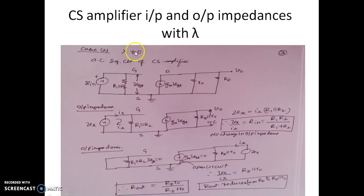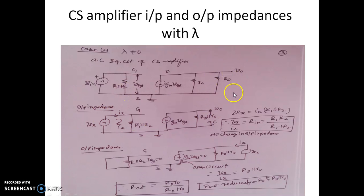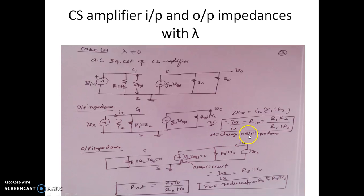Now we continue with the CS amplifier input and output impedances considering lambda non-zero. When lambda is non-zero, R0 is connected within the device — this is the small signal model with lambda non-zero. To find the input impedance, the output is open circuit. R0 and Rd come in parallel. Applying dummy source Vx at the input, Vx/Ix equals R1 parallel R2. So whether lambda is zero or non-zero, the input impedance remains R1 parallel R2.